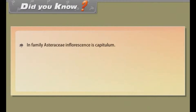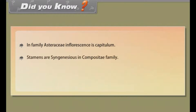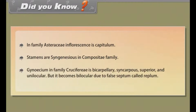Did you know? In family Asteraceae, the inflorescence is capitulum. Stamens are syngenesious in the Compositae family. Gynoecium in family Cruciferae is bicarpellary, syncarpous, superior and unilocular, but it becomes bilocular due to a false septum called replum.